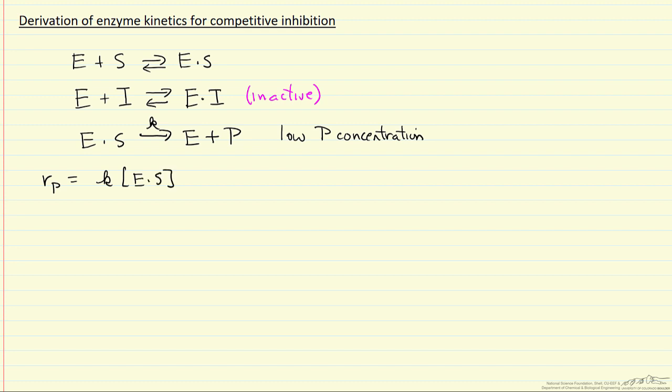Now of course we want the rate expression in terms of concentration of things we can measure, and so applying the rate determining step says we're going to assume this first step is in equilibrium, it's quasi-equilibrium, we're going to write an equilibrium constant for the reverse step just because of the normal terminology.